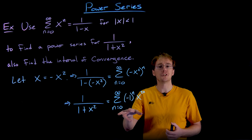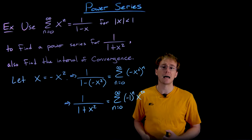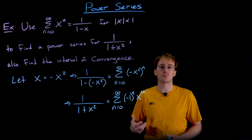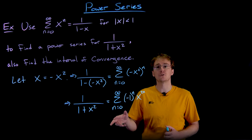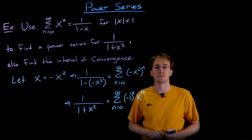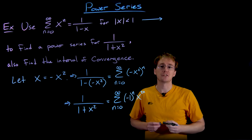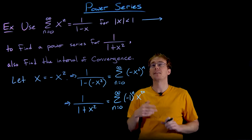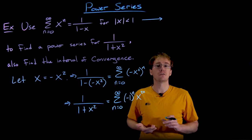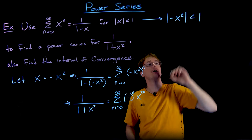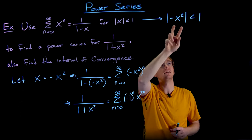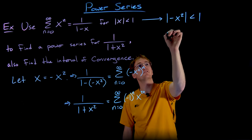We could take the ratio test on this new power series directly, but a more efficient approach is to apply the same substitution we made to the series — replacing x with -x² — to the inequality describing the original interval of convergence. That gives us the new interval of convergence without repeating the full ratio test calculation.